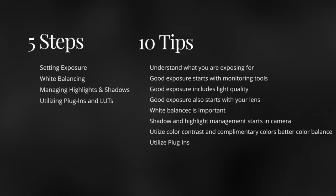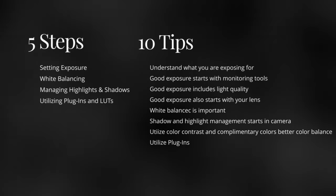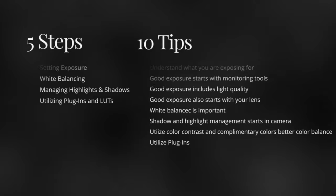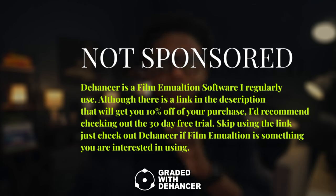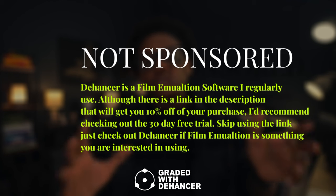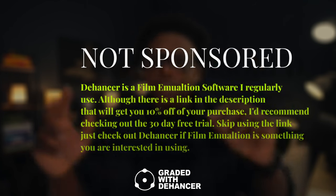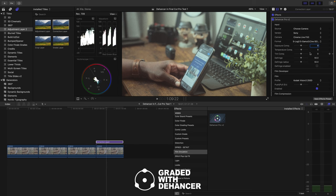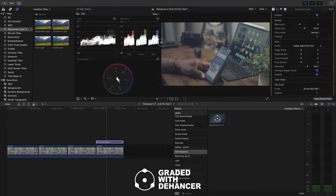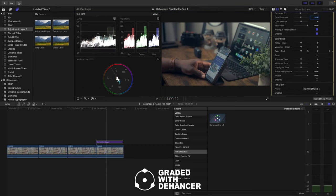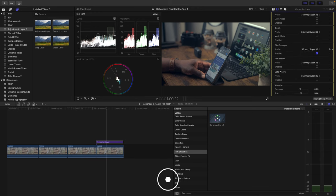Step four: utilizing plugins and LUTs. Tip seven: plugins can definitely assist you in converting your footage, color management, and speeding up your conversion workflow. Dehancer is a one-stop shop for converting log footage, color management, and everything else when it comes to creating a pleasing or cinematic image. It can help with replication and accuracy when matching shots, and it comes with film simulations, advanced monitoring tools, and creative tools like grain, halation, bloom, and film damage.